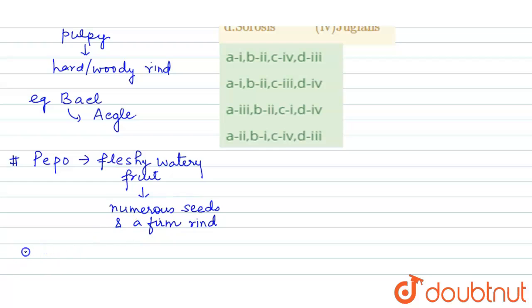The Cucumis is the genus name having pepo fruits. For example, cucumber, musk melon, etc.